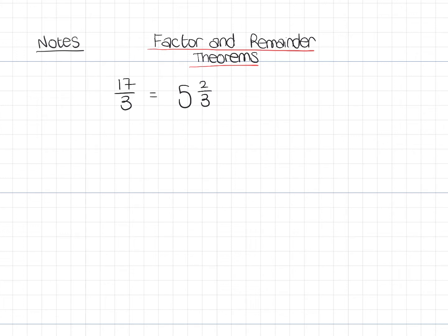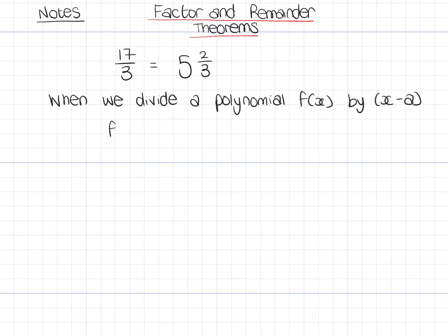And what we're going to do is we're going to try and look at how we can find the remainder when we're dividing algebra, dividing a polynomial. So when we divide a polynomial f(x) by x minus a, what we would get would be f(x) divided by x minus a equals, I'm going to write this as q plus r over x minus a.